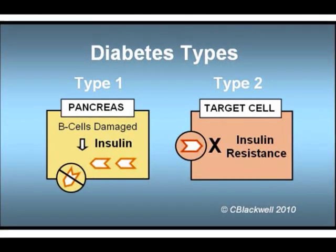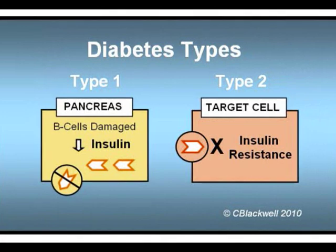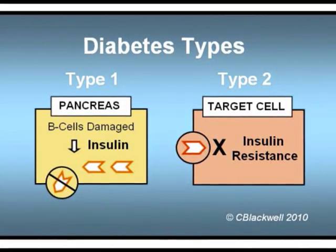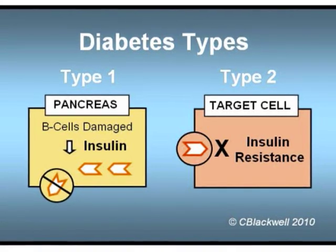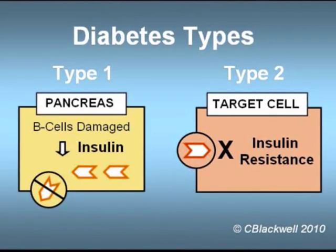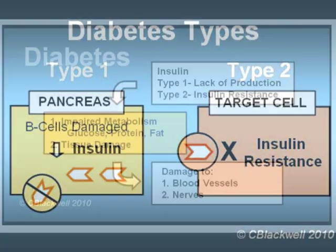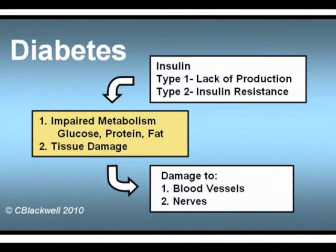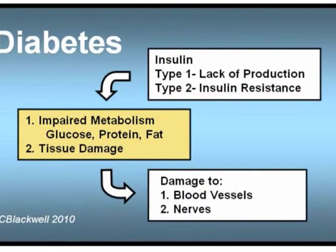Traditionally, diabetes has been defined as a disease based on poor control of glucose in your body. A more complete answer is that diabetes is more about insulin than about glucose — either a decreased production of insulin or a decreased effect of insulin called insulin resistance. Either way, diabetes interferes with metabolism.